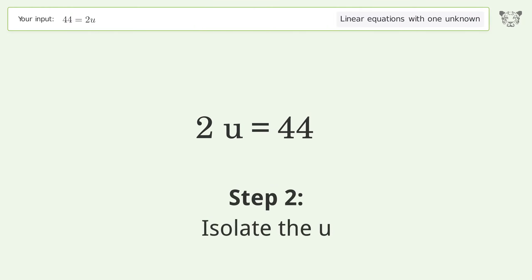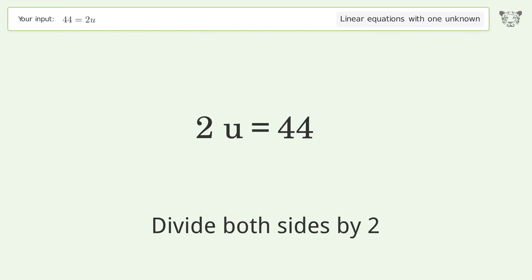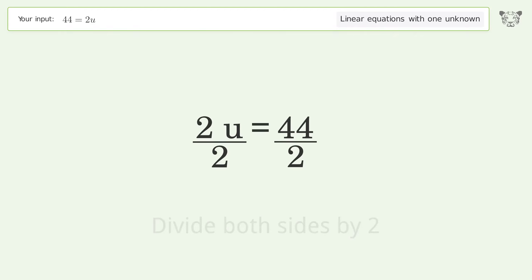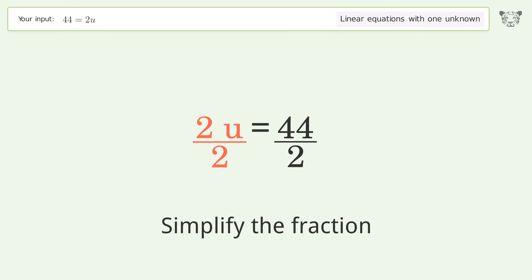Isolate the u: divide both sides by two. Then simplify the fraction.